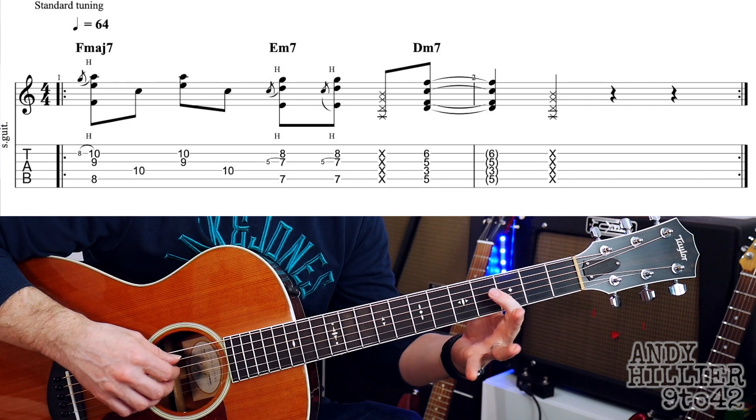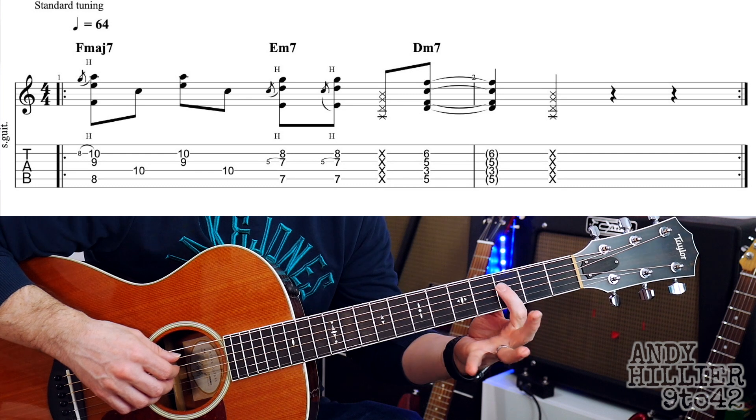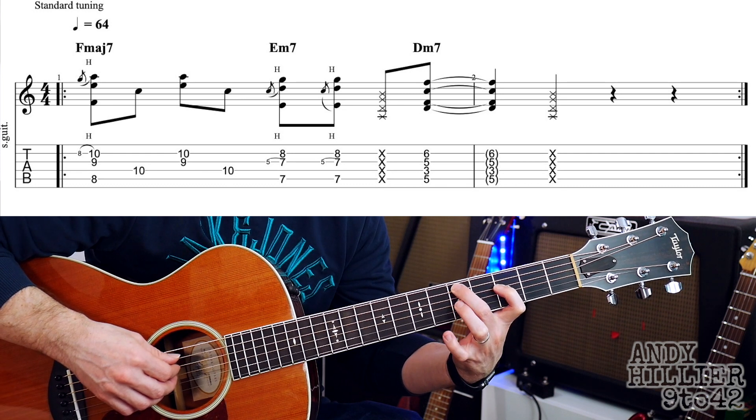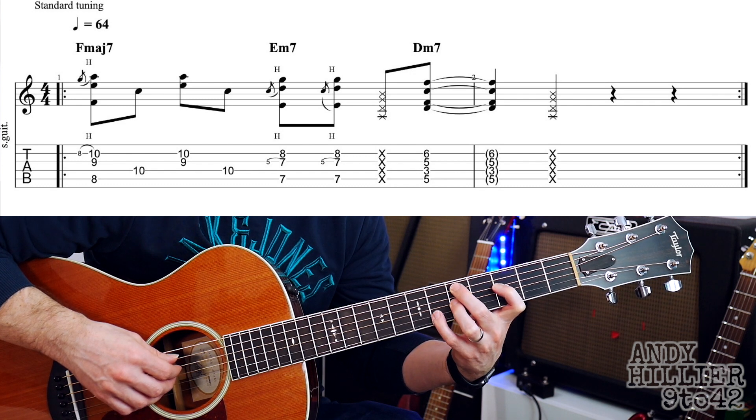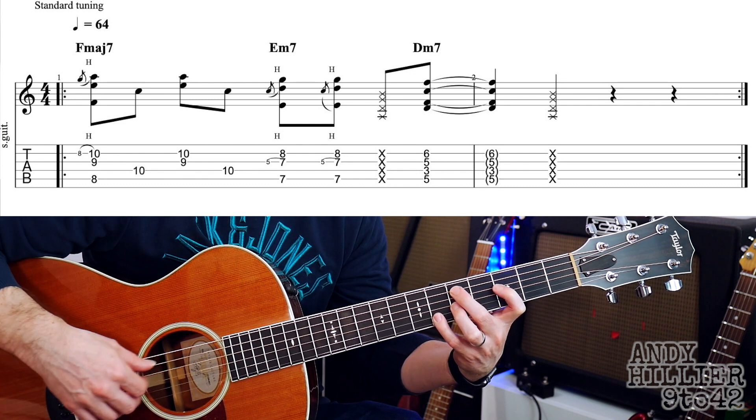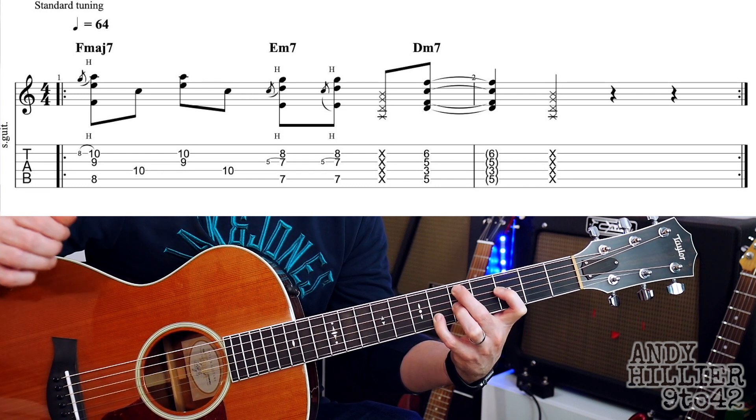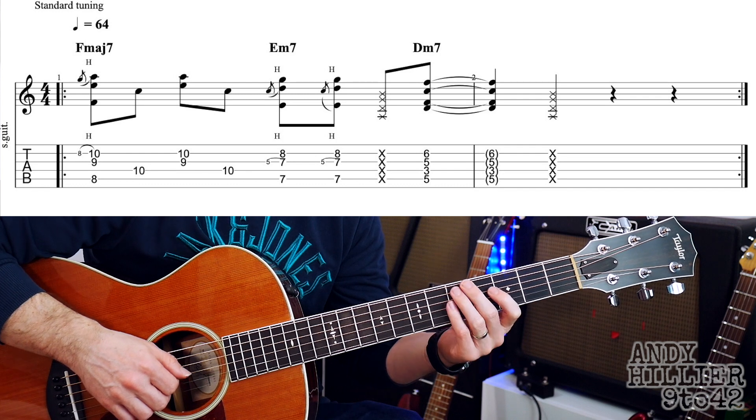And then it goes down to a D minor 7 chord, which is your first finger on D3, second finger A5, third finger G5, and little finger on B6. We hit all those strings at the same time, and then in the next bar we've just got a hit on the strings.